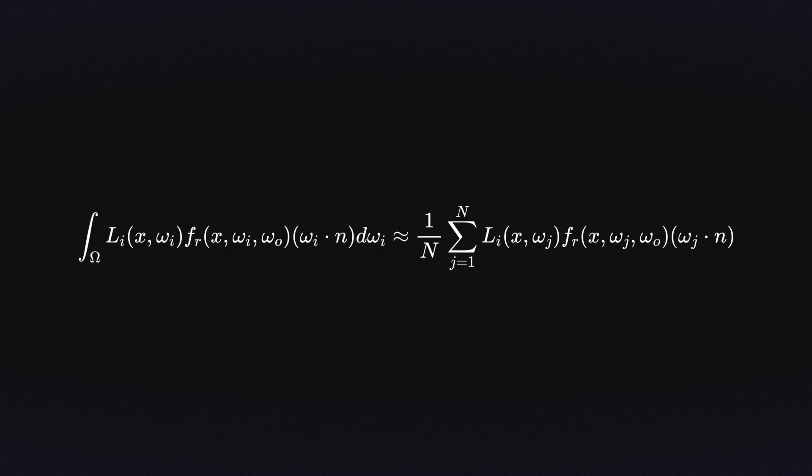So, to approximate the light reflected off a surface at the given point, we take samples of the transported light from n different directions in the hemisphere.